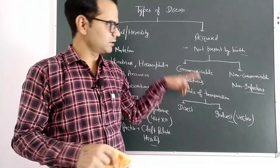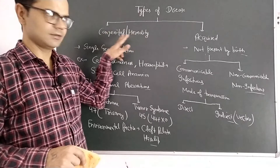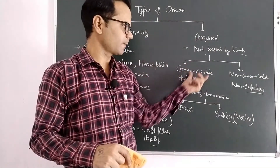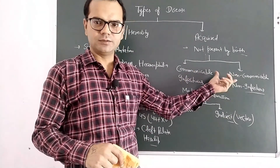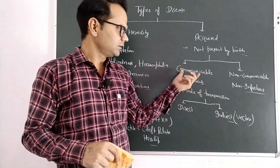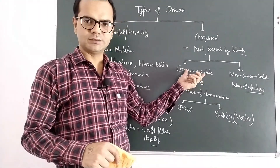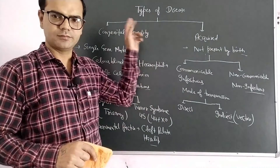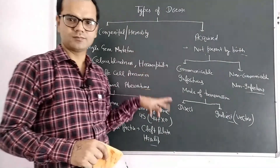So this is the basic division of disease — two types: congenital versus acquired. Acquired diseases are further divided into two types: communicable and non-communicable. In the next video, we will discuss communicable disease. That's it for types of disease — I hope you understood.